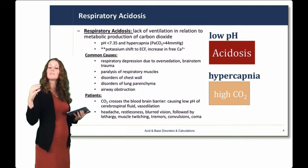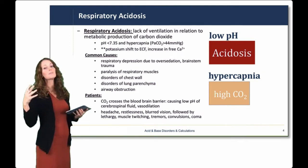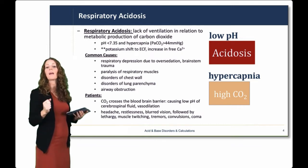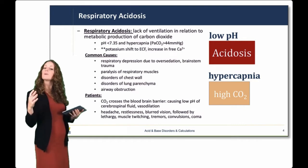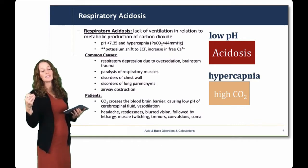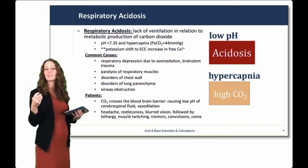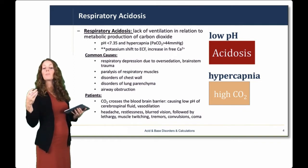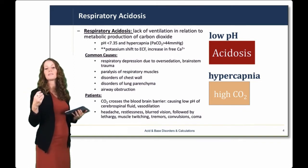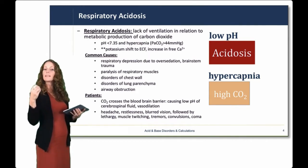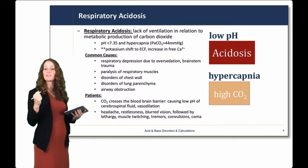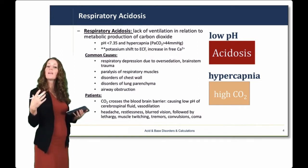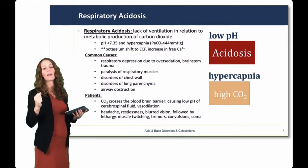A respiratory acidosis is due to some respiratory cause of a buildup of carbon dioxide. Common causes are respiratory depression — some medications can cause respiratory depression, over-sedation, and brain stem trauma. Also paralysis of respiratory muscles, disorders of the chest wall that don't allow for appropriate ventilation, and disorders of the lung and airway obstruction that don't allow for enough ventilation to remove that carbon dioxide.